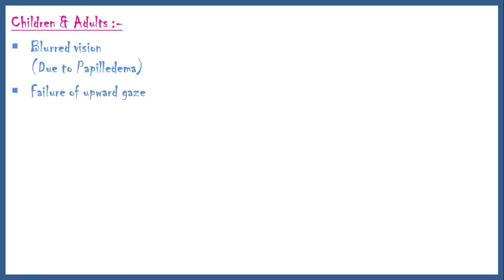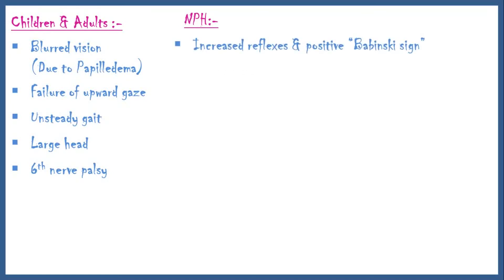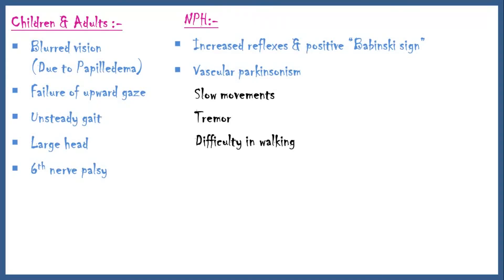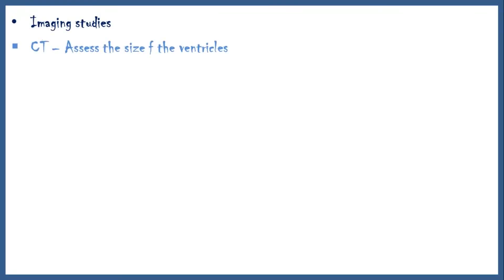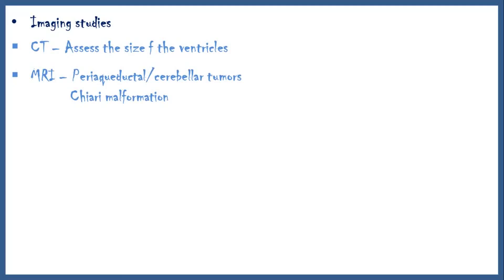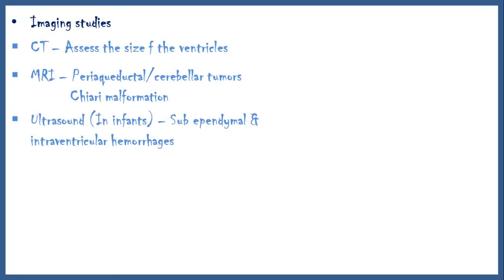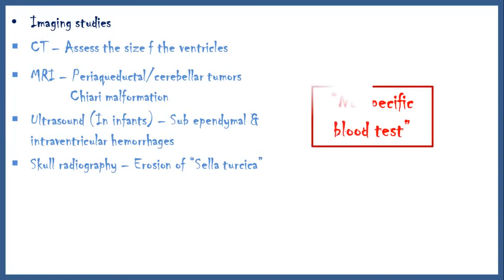In children and adults, clinical findings include blurred vision due to papilledema, failure of upward gaze, unsteady gait, large head, and sixth nerve palsy. In normal pressure hydrocephalus, increased reflexes and positive Babinski sign, vascular parkinsonism characterized by slow movements, tremor and difficulty in walking, though these patients have normal muscle strength with no sensory loss. Imaging studies include CT scanning to assess ventricle size, MRI scanning for periaqueductal cerebellar tumors and Chiari malformation, ultrasound scanning in infants for subependymal and intraventricular hemorrhages, and skull radiography for erosion of the sella turcica. There is no specific blood test to diagnose hydrocephalus.